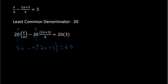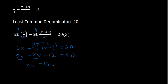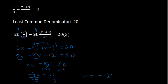Be careful here with this minus 4 — it's going to be multiplied by everything in parentheses. So we have 5x minus 8x, and negative 4 times 3 is negative 12, equal to 60. So then 5x minus 8x is negative 3x minus 12 equals 60. Adding 12 to both sides gives negative 3x equals 72. Dividing both sides by negative 3 gives x equals 72 over negative 3, which is negative 24. So my solution is negative 24.